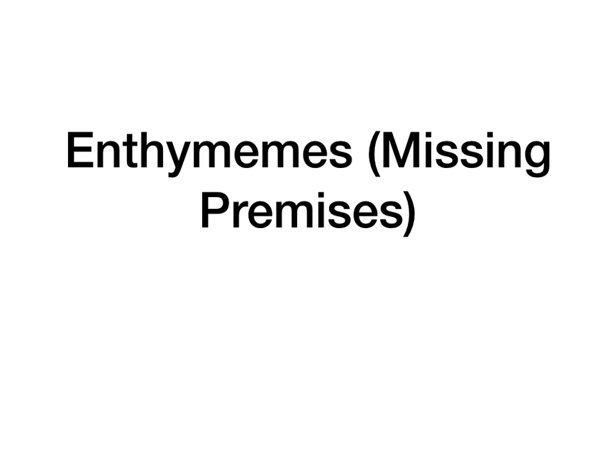Smith mentions this idea of enthymemes. An enthymeme is just a fancy way of saying an argument with a missing or implied premise. It assumes something that it doesn't state, and it needs this assumption to be valid. An enthymeme is just an argument with missing premises. Don't confuse the missing premise itself with an enthymeme — an enthymeme is the name for an argument that has a missing premise.